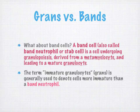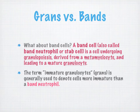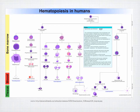A band cell, also called a band neutrophil or stab cell, is a cell undergoing granulopoiesis. That band cell is derived from a metamyelocyte and leads to a mature granulocyte. The term 'immature granulocytes' or 'grands' is generally used to denote cells that are more immature than a band cell. So the grand cell is more immature than the band neutrophil — kind of counterintuitive.